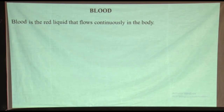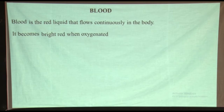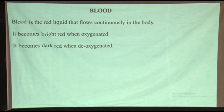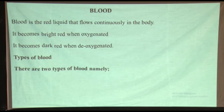Let us look at the types of blood. When the blood becomes bright red, it simply becomes oxygenated. So this gives a type of blood as oxygenated blood. When blood gets into the lungs, it gets oxygen, becomes oxygenated, and drops carbon dioxide. This blood flows back to the heart so it can be pumped to all body parts along the blood vessel called the aorta. This is simply called oxygenated blood — blood with oxygen or blood containing oxygen.